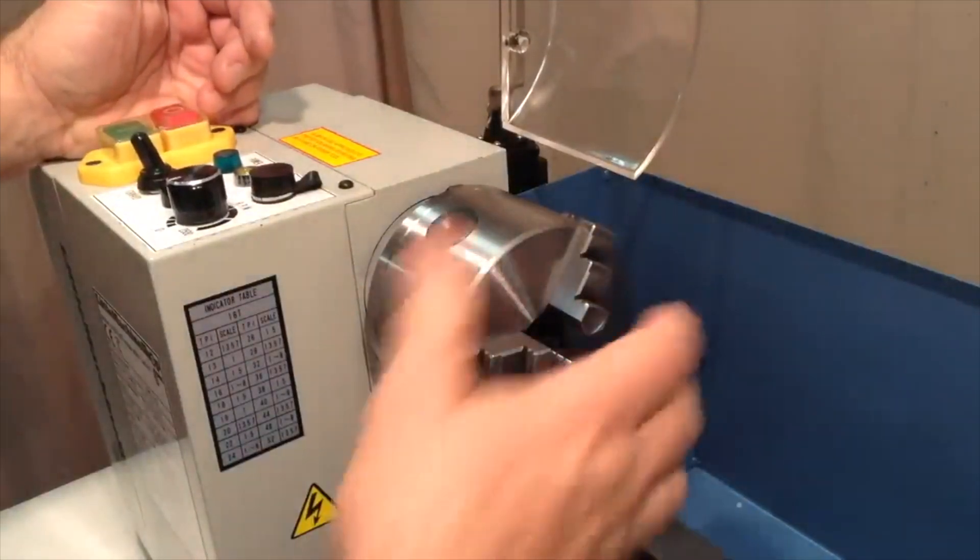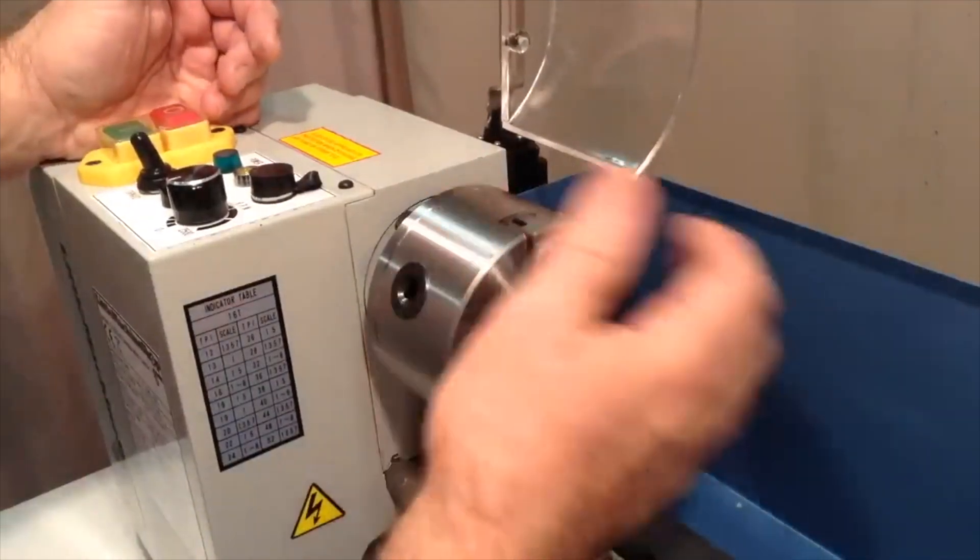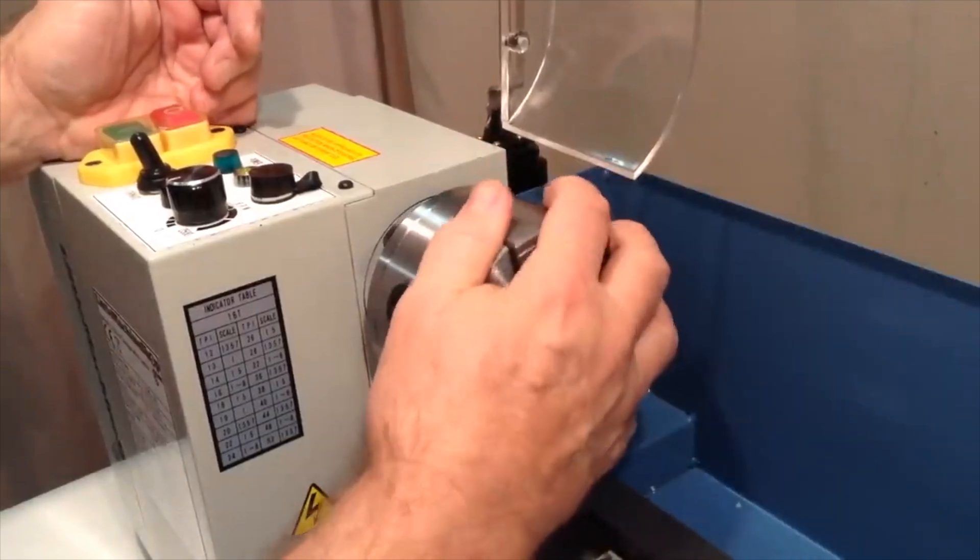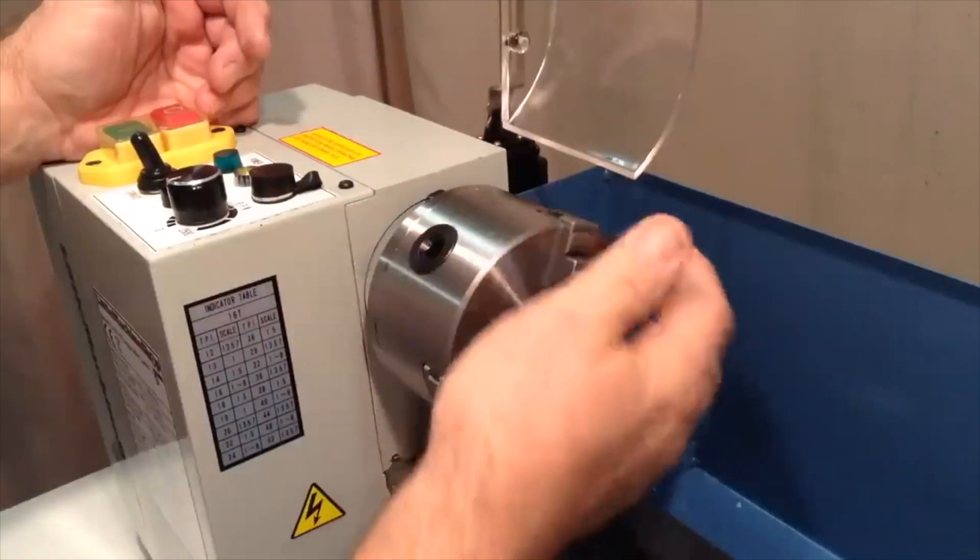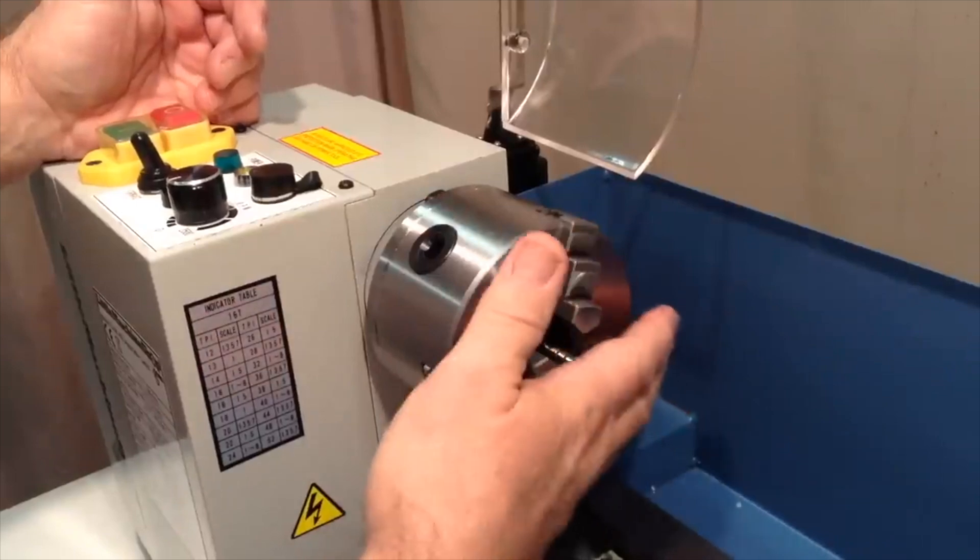I've even used a five inch chuck on my mini lathe and I think it's safe to do that as long as you take some safety precautions, but the four inch is probably the optimal size for this lathe in my opinion.